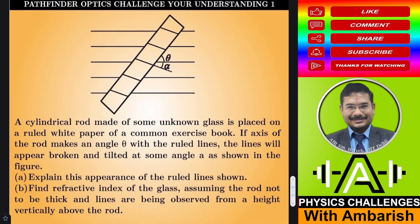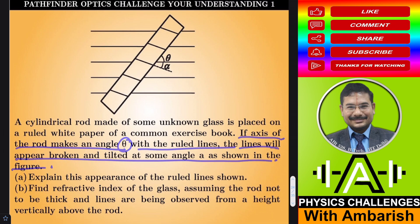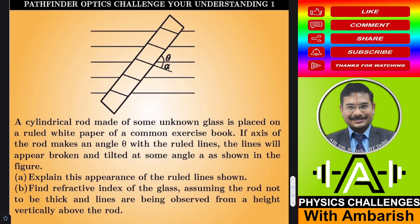I'll read out the problem and if you want, you can try it. A cylindrical rod made of some unknown glass is placed on a ruled white paper of a common exercise book. If the axis of the rod makes an angle theta with the ruled lines, the lines will appear broken and tilted at some angle as shown in the figure. Part A of the question is: explain this appearance of the ruled lines and find the refractive index of the glass, assuming the rod is not thick.